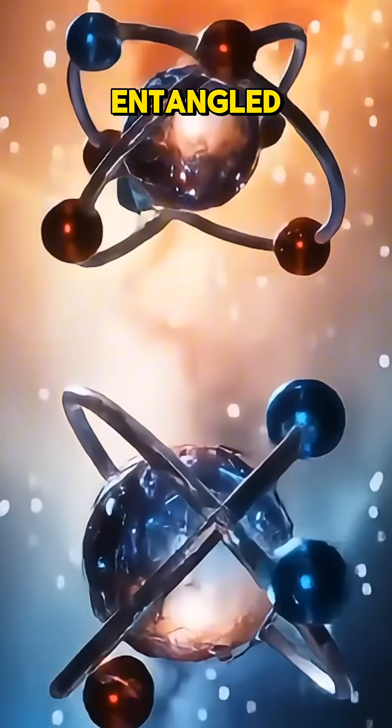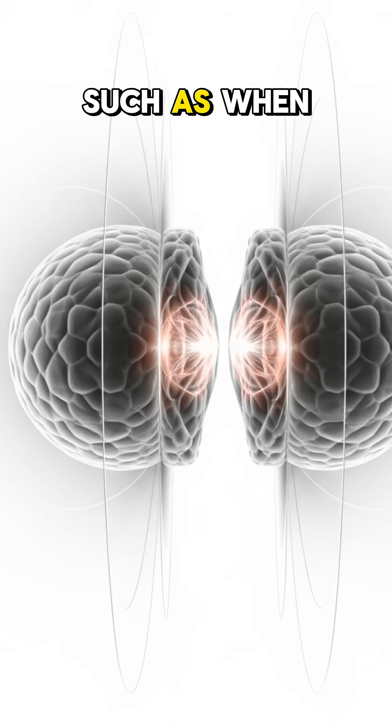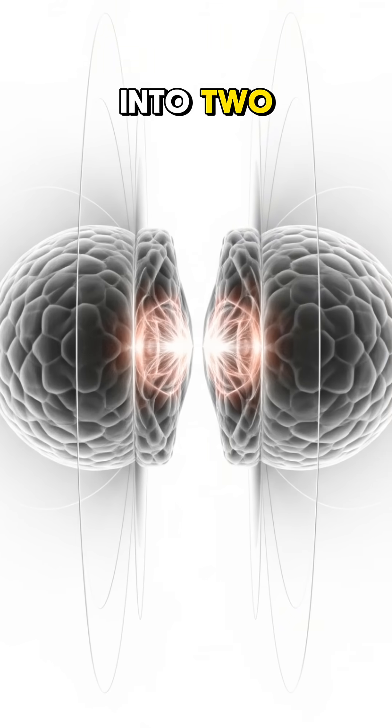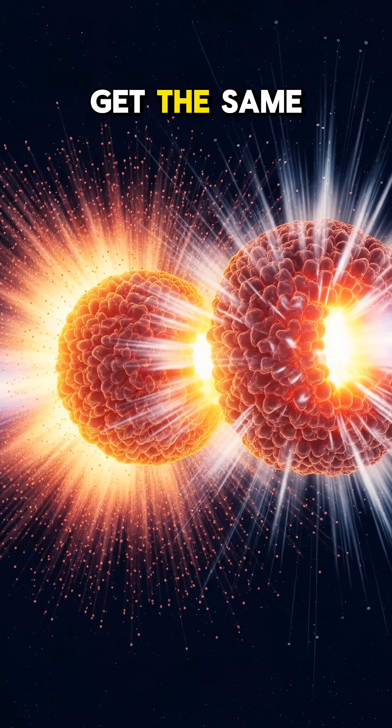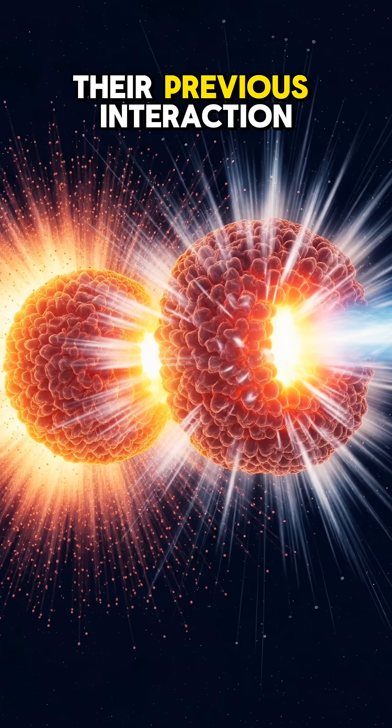The way that particles can get entangled varies from the process of decay, such as when one particle decays into two, or through a process of collision when two particles get the same property solely based on their previous interaction.